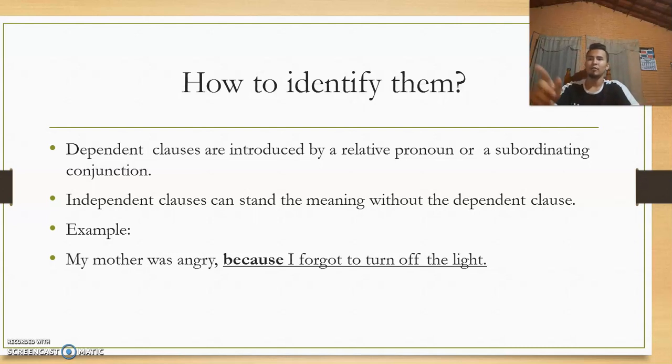We have here an example: my mother was angry because I forgot to turn off the light. If we erase this part - because I forgot to turn off the light - we know that this still makes sense. It's still a complete sentence, a group of words, and these are the independent clause.